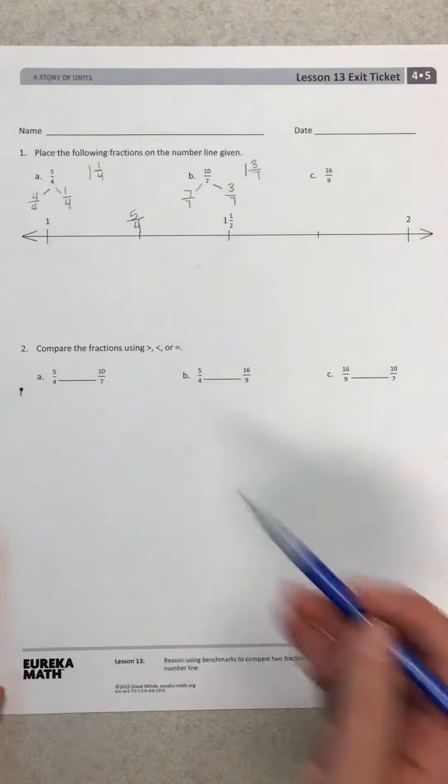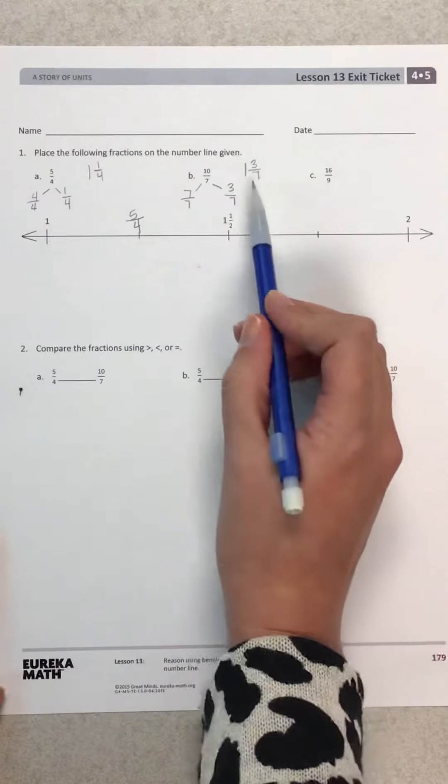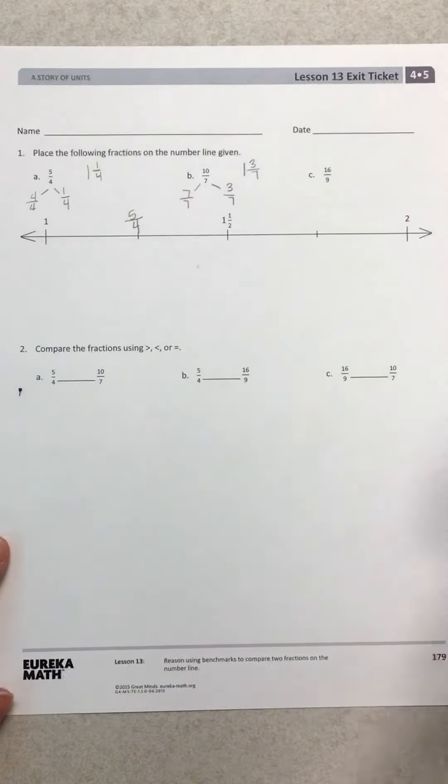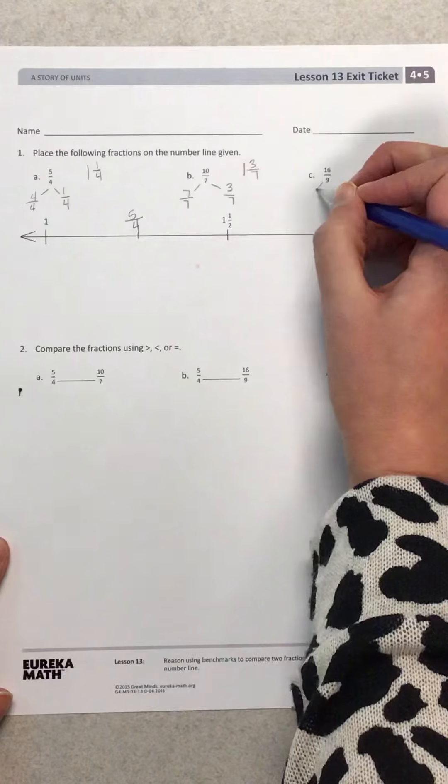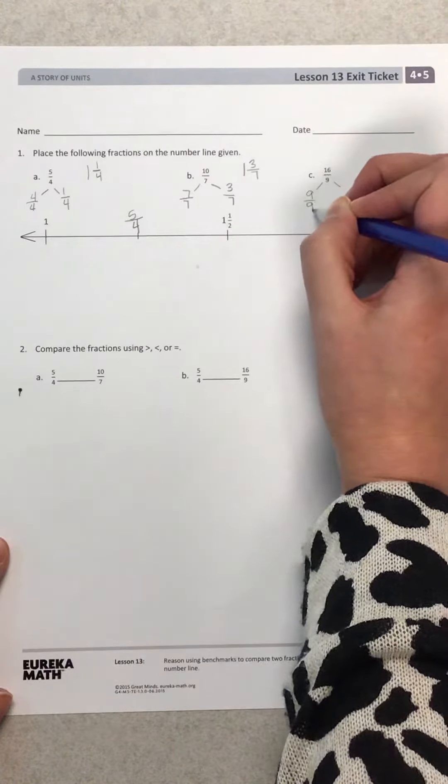So friends, your job is to decide where on this number line will I put 1 and 3 sevenths. The last one is 16 ninths, and so I will break that into my number bond and make 9 ninths as my whole.